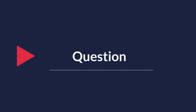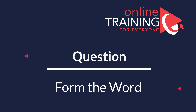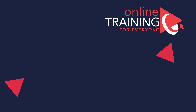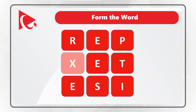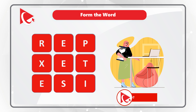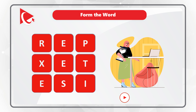Very frequently, you might get tested on how quickly you can form words using letters of the English alphabet. In our case, you are presented with nine letters, and you need to form a word using all the letters only once. The letters are R, E, P, X, E, T, E, S, I. Do you see the word? Give yourself 10 to 15 seconds to see if you can answer the question.